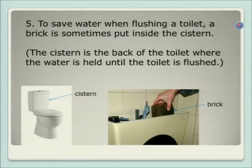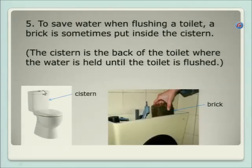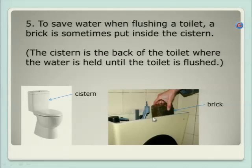Have a look there. I don't know if any of you have been aware of this or do this in your own home, or know of somebody who does it, but to save water when flushing a toilet, a brick is sometimes put inside the cistern. The cistern is the back section of the toilet — that's where the water goes in and stays until the toilet is flushed. What some people do is take a brick and put it in there, some big heavy thing, to take up some of the space so that less water is used every time the toilet is flushed.